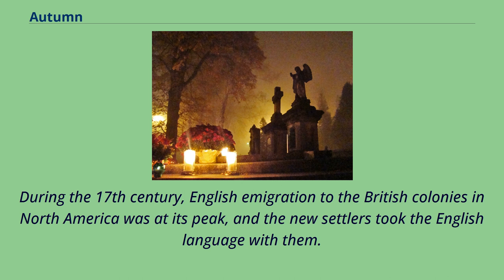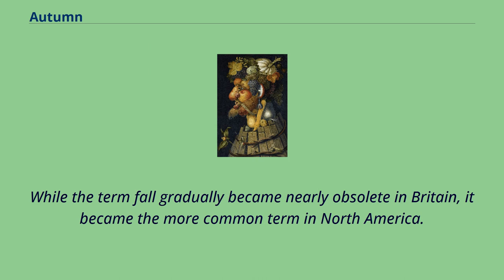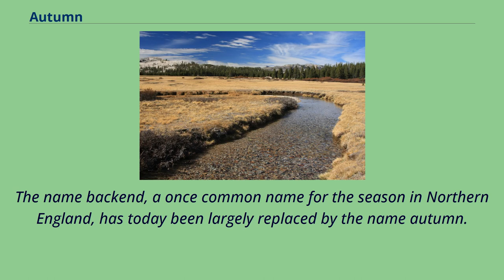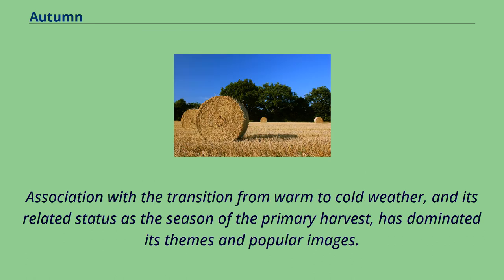While the term fall gradually became nearly obsolete in Britain, it became the more common term in North America. The name Backend, a once common name for the season in Northern England, has today been largely replaced by the name Autumn. Association with the transition from warm to cold weather, and its related status as the season of the primary harvest, has dominated its themes and popular images.